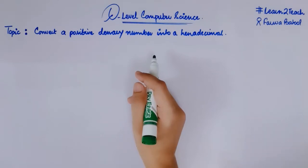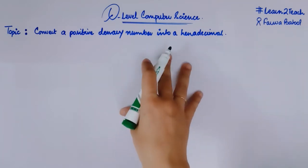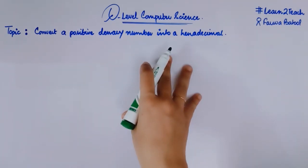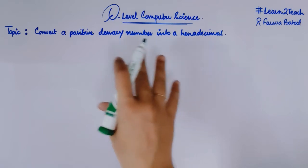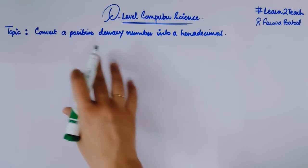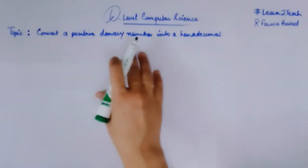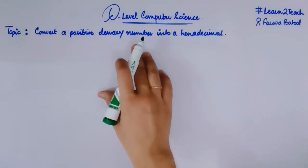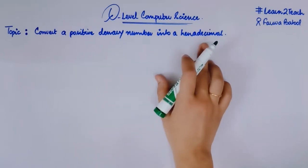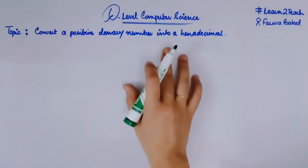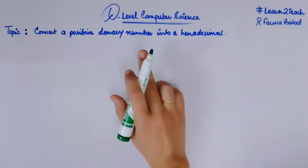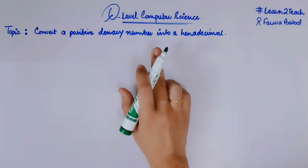Hello everyone, this is your instructor Farwa Batool and welcome to the course of O-level computer science. So we were studying the topic of hexadecimals and inside that we are looking at the conversions. In this video, I'm going to tell you how you can convert a positive denary number or a decimal number into a hexadecimal one. I'm going to share two examples with you. First example would be from your book and the second would be from past paper.